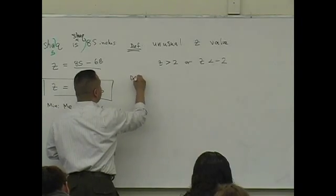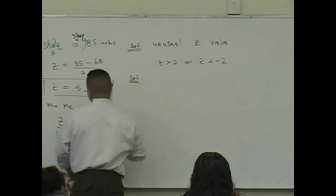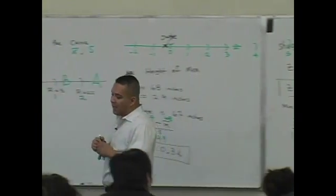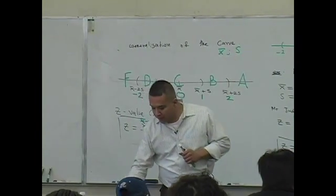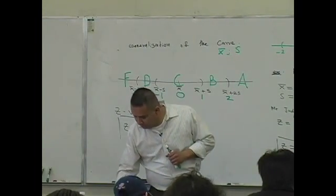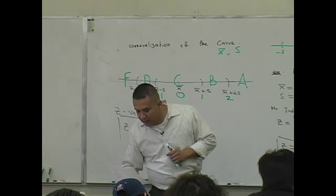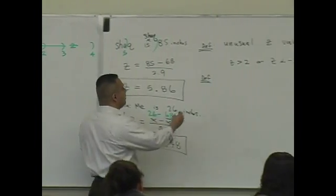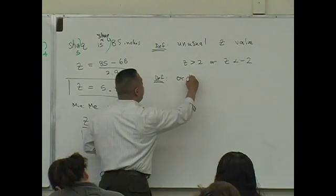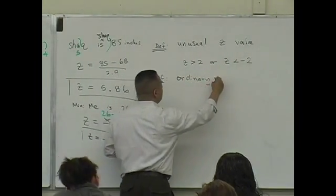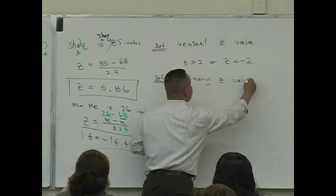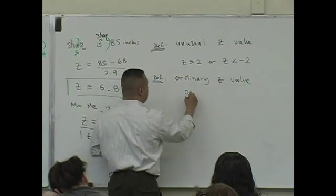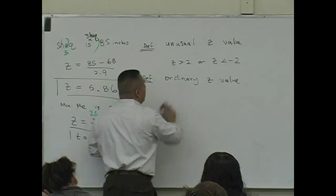I think your book defines it as unusual. Meaning, if something has a Z score greater than two or less than negative two, we consider that unusual. You consider an ordinary Z value to be any value that is between two and negative two.